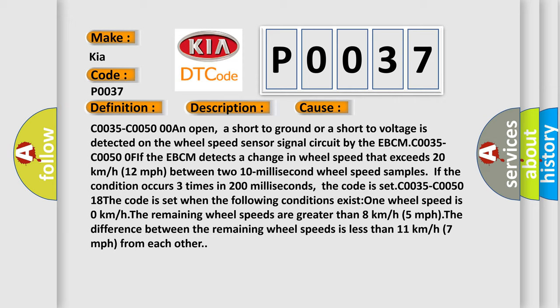C0035-C0050 0F: If the EBCM detects a change in wheel speed that exceeds 20 km/h (12 mph) between two 10 millisecond wheel speed samples. If the condition occurs three times in 200 milliseconds, the code is set. C0035-C0050 18: The code is set when the following conditions exist.